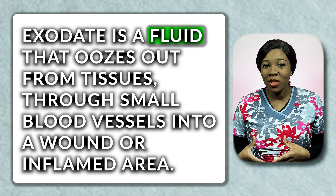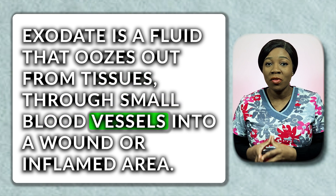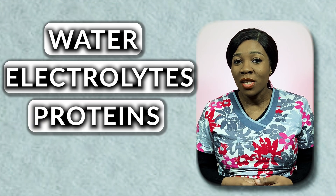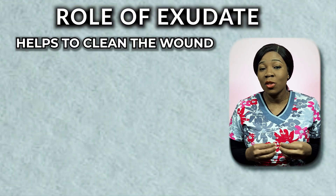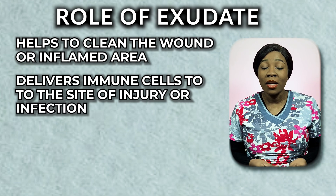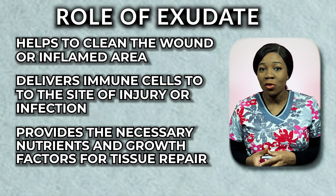Exudate is a fluid that oozes out from tissue through small blood vessels into a wound or inflamed area. It contains a variety of components such as water, electrolytes, proteins, and cells, and can vary in color, consistency, and other properties. Exudate plays a crucial role in the body's natural healing process, helping to clean the wound, deliver immune cells to the site of injury or infection.